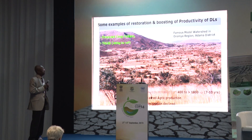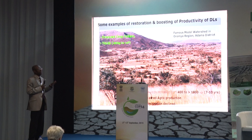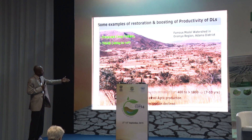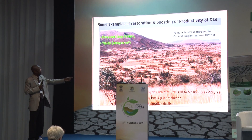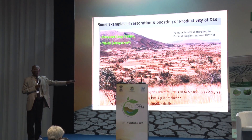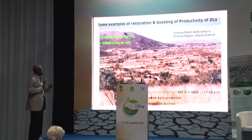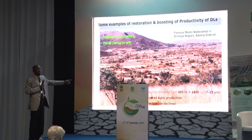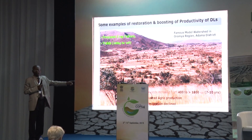After about seven to ten years, there was a dramatic change in productivity. Crop yield increased from about 400 kg to 1,800 kg per hectare — a more than 350% increase. It is not only an increase in crop production, but also sustained agricultural production.